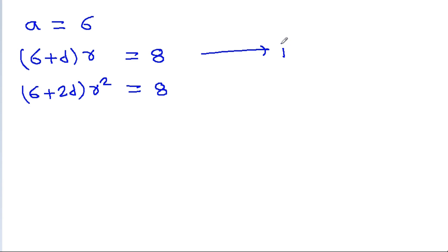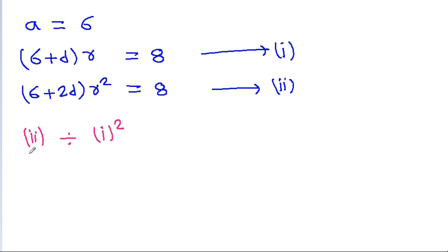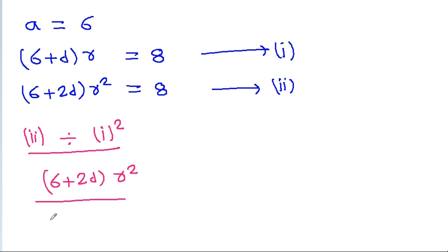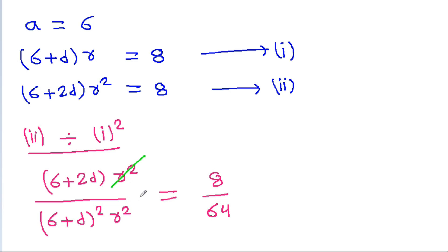Now if we divide equation 2 by equation 1 squared, equation 2 is (6 + 2D·R²) = 8, and equation 1 squared gives 64. So dividing gives (6 + 2D·R²) / (6 + D·R)² = 8/64. The R² terms cancel accordingly.